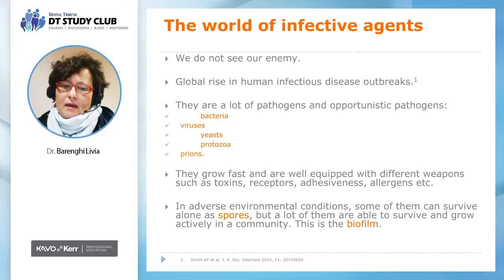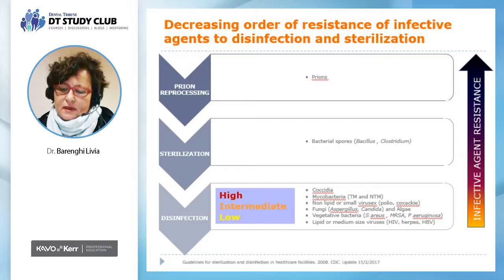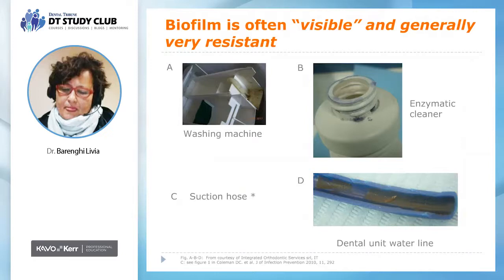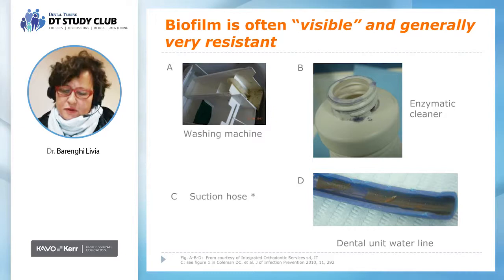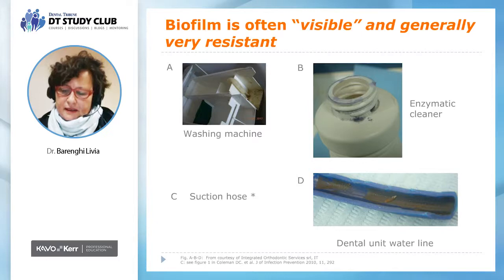Infective agents show decreasing orders of resistance to disinfection and sterilization, with mycobacteria, spores, and prions the most resistant, and HIV and HPV the least. Bacteria within biofilm are up to 1000 times more resistant to antimicrobials and detergents than the same bacteria in suspension. Biofilm appears as staining — in dentistry as sticky materials in suction hoses, on bottles of enzymatic cleaners, or inside the water lines.